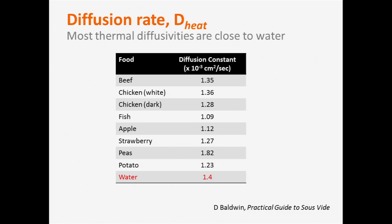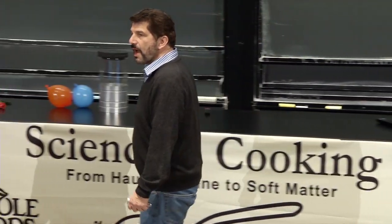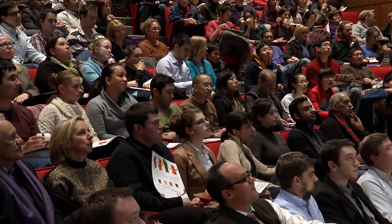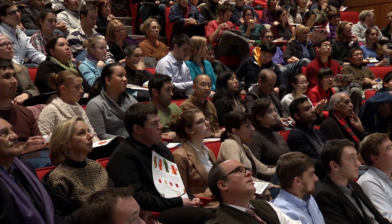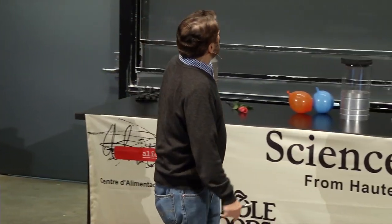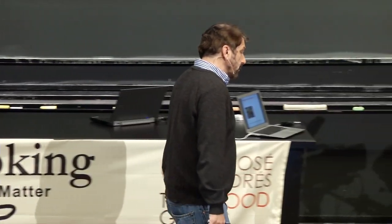Nathan has also studied sous vide cooking and made measurements of this sort. Notice that the diffusion coefficients really don't vary by very much—they're all very close to water. That's not surprising because most foods are predominantly water. In fact, if we just use the diffusion coefficient for water, we'd get a good value for turkey cooking times.